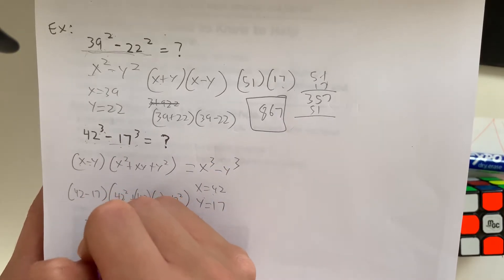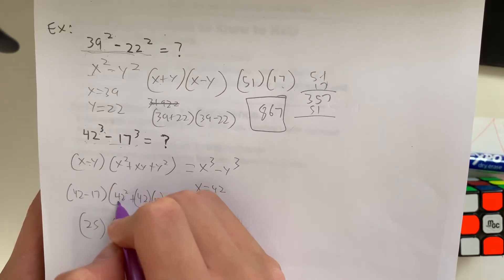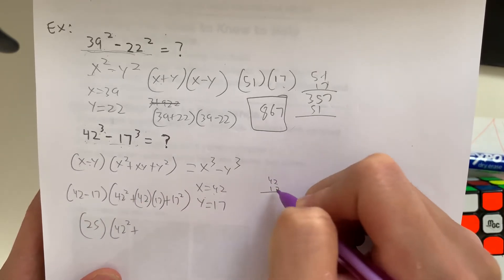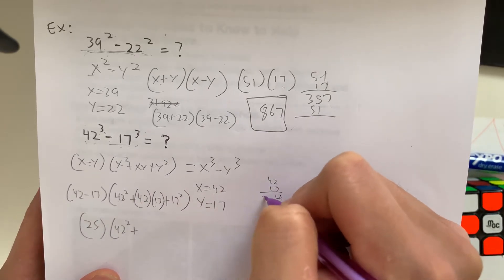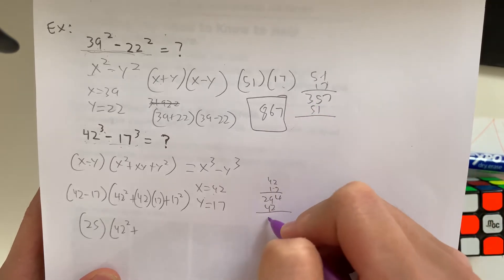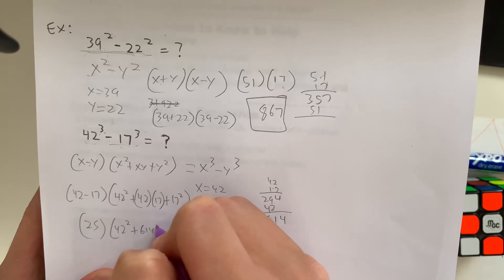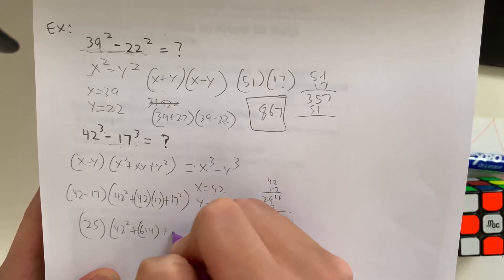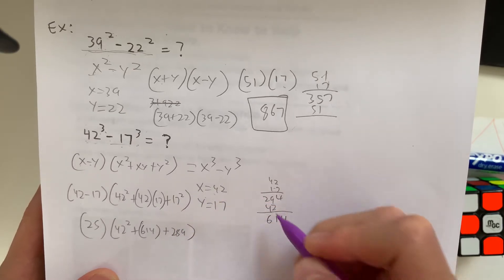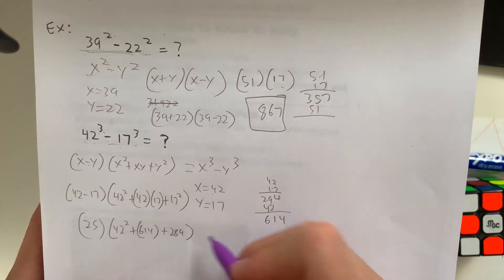That's equal to 25 times what's 42 squared plus what's 42 times 17? 14, 29, 2, 4. That's going to be 614 plus 614 plus 17 squared is 289. And you can do the math from here.